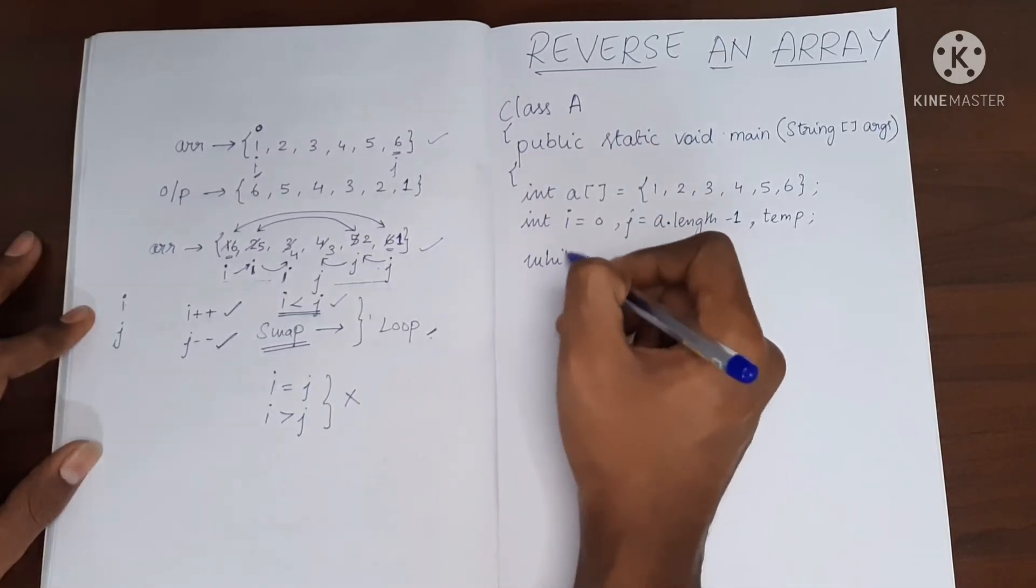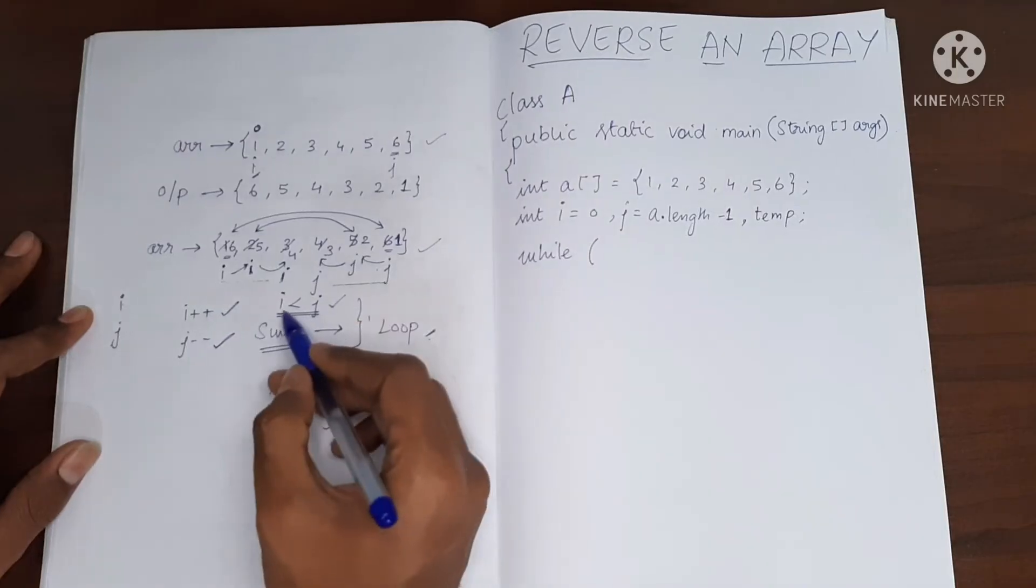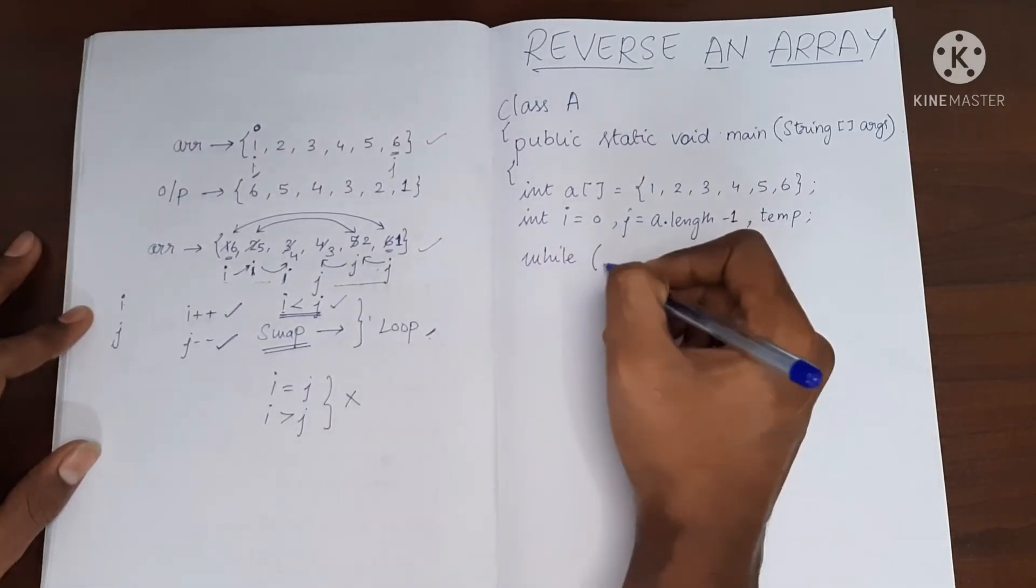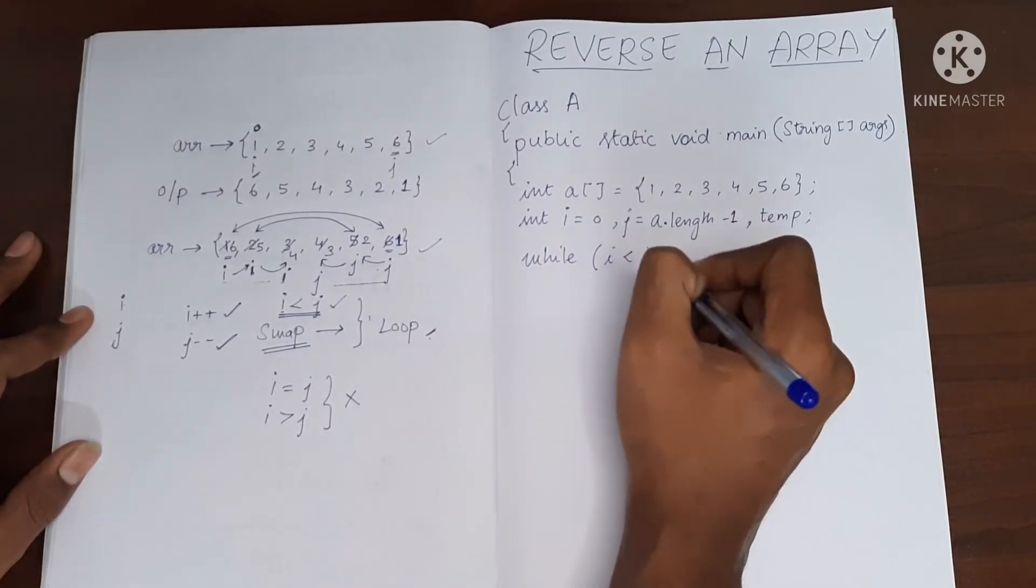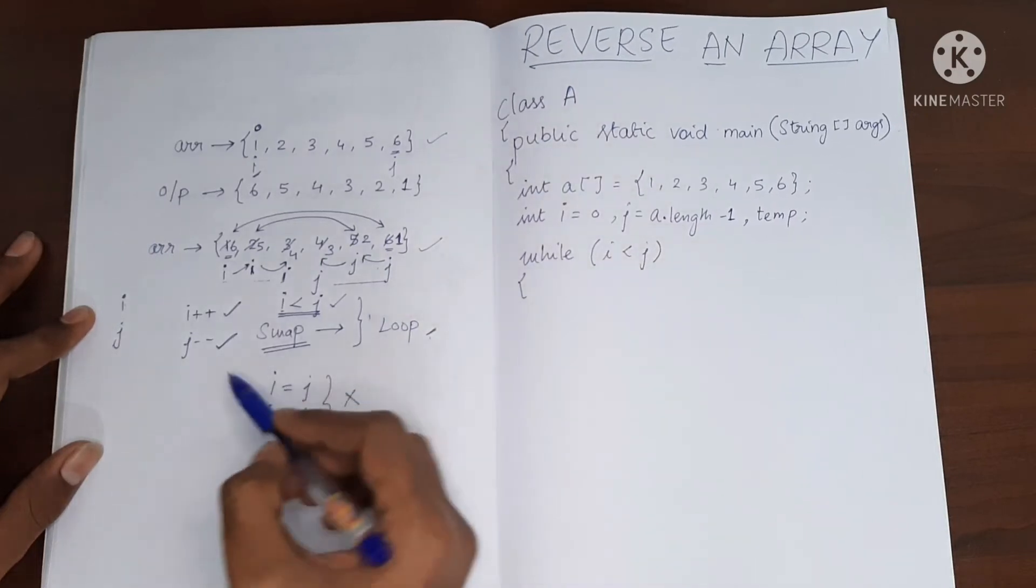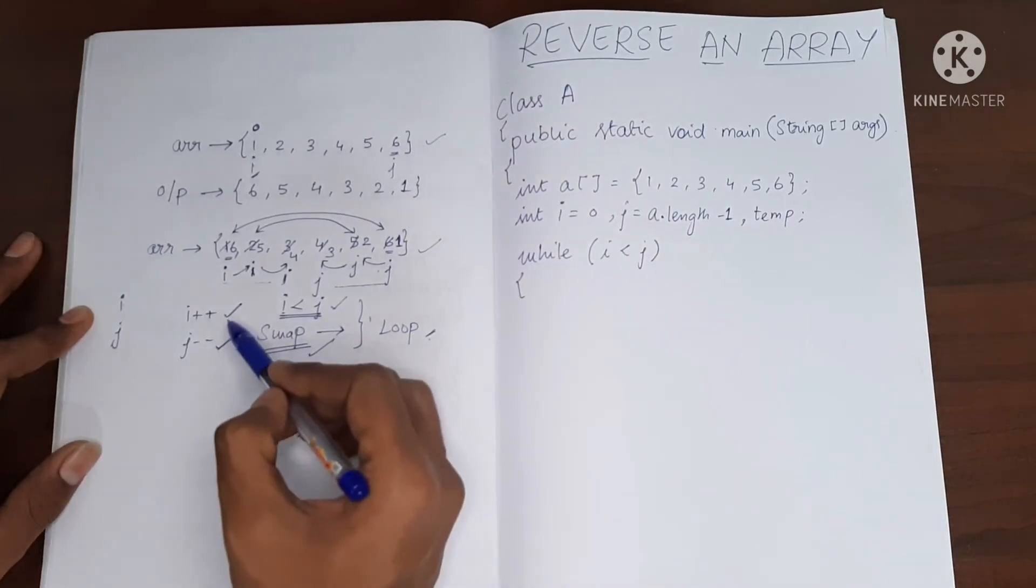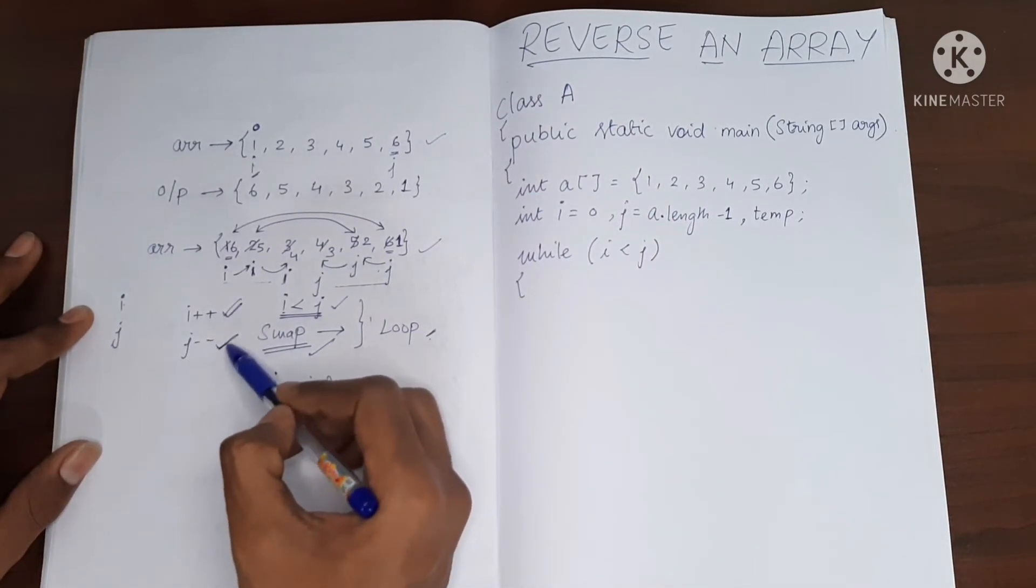Now I will do this in a while loop. I will say while i is less than j, I am going to do the swap and then incrementing i and then decreasing j.